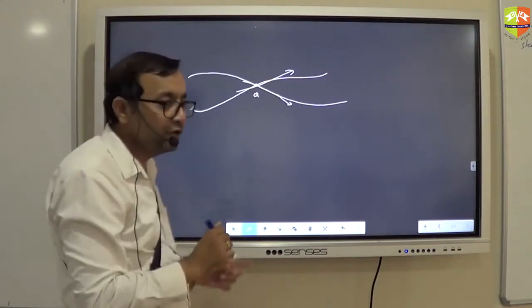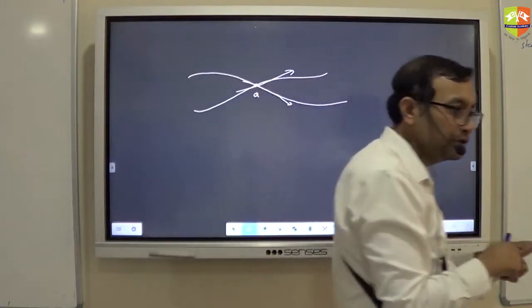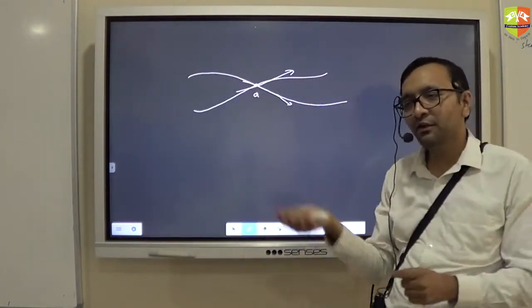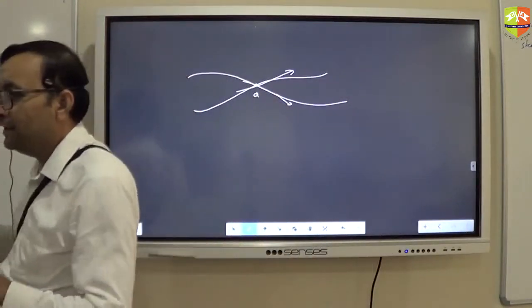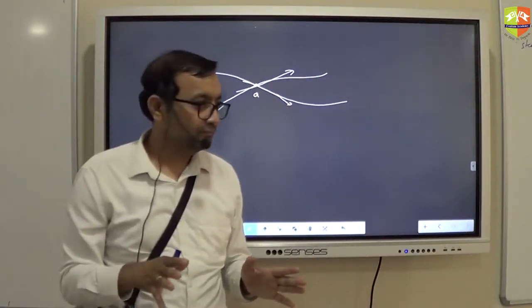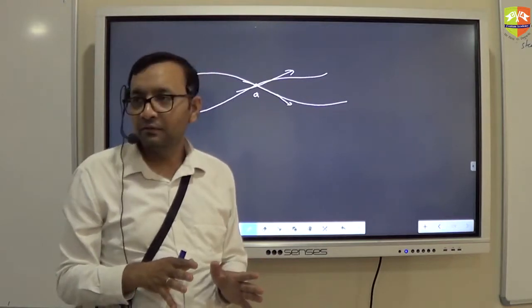So if they intersect, you will have two tangents along the two streamlines, which is against the definition of streamline itself. Right? So that is why two streamlines will never intersect.